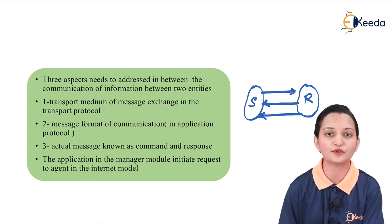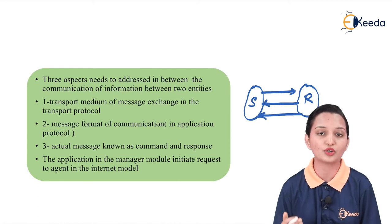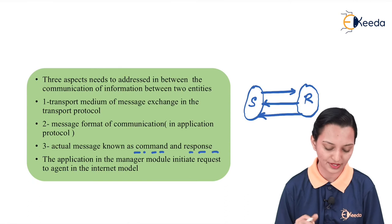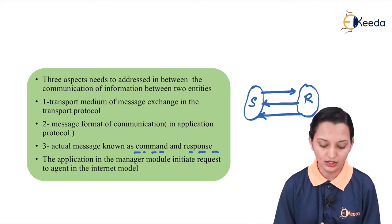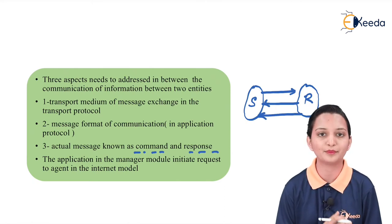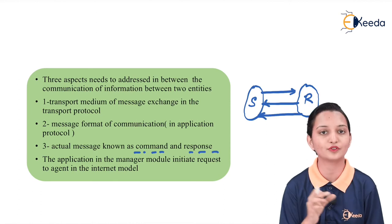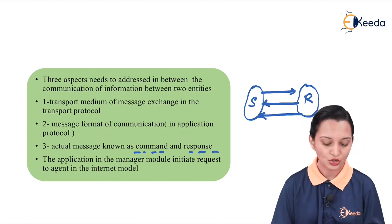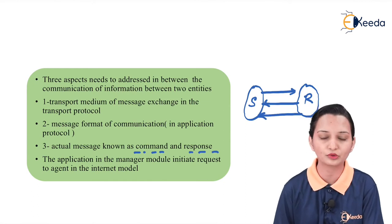The third aspect is the actual message, known as command and response. Whatever we transmit must be sent with a command and received with a response. The application in the manager model initiates a request to the agent. In the communication model, the manager is the sender and the agent is the receiver. We must follow all rules and regulations set by each layer's protocol. These three aspects — transport protocol, application protocol, and internet protocol — define the communication model.